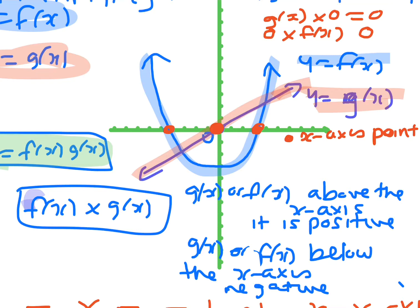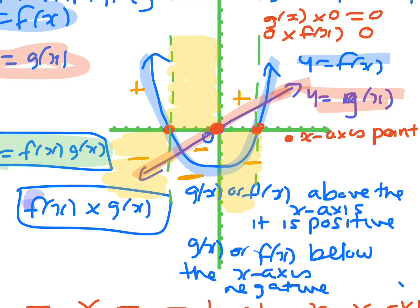Draw dotted lines through all those intercepts to divide the graph into regions. You can see that f of x is above here and this one's below, so that's positive times negative — that will end up being negative, so shade in that region below. In the next region, both are below the x-axis, so negative times negative gives a positive — the resulting graph will be up here. Then the next region is positive times negative, so it's negative — down there.